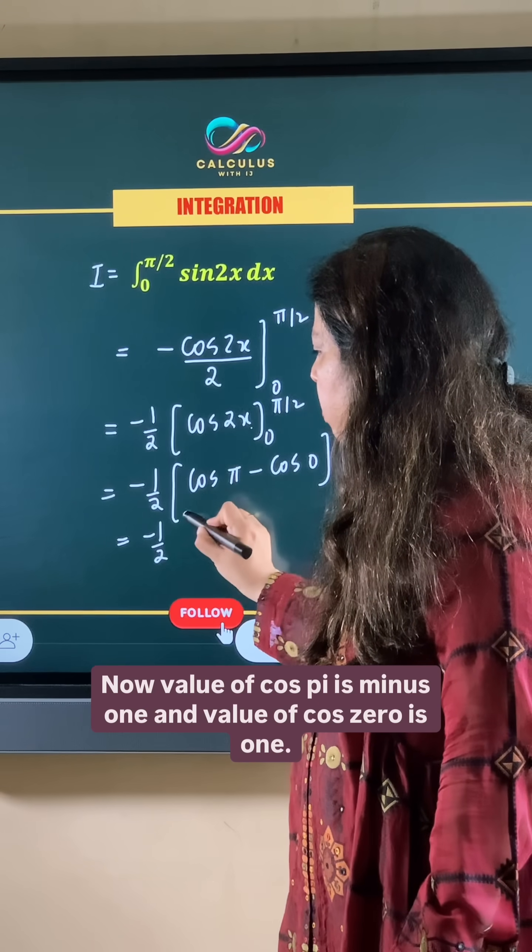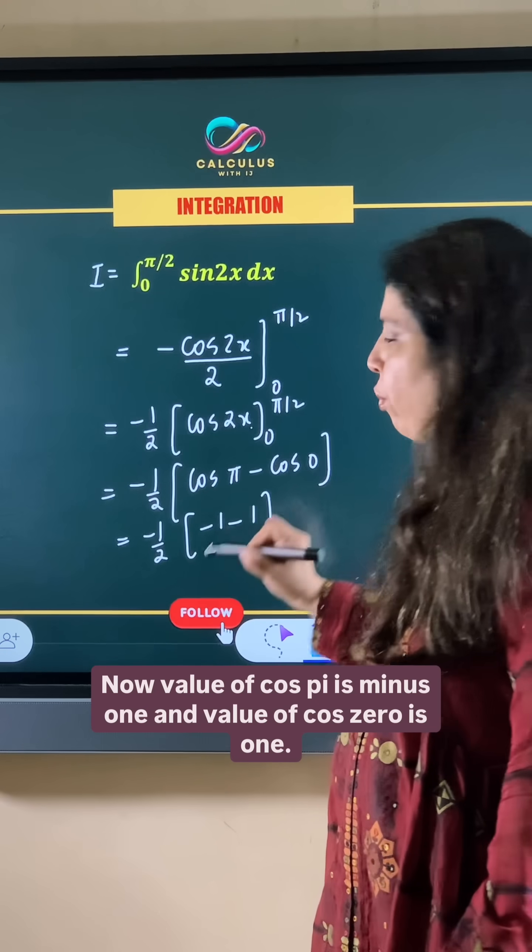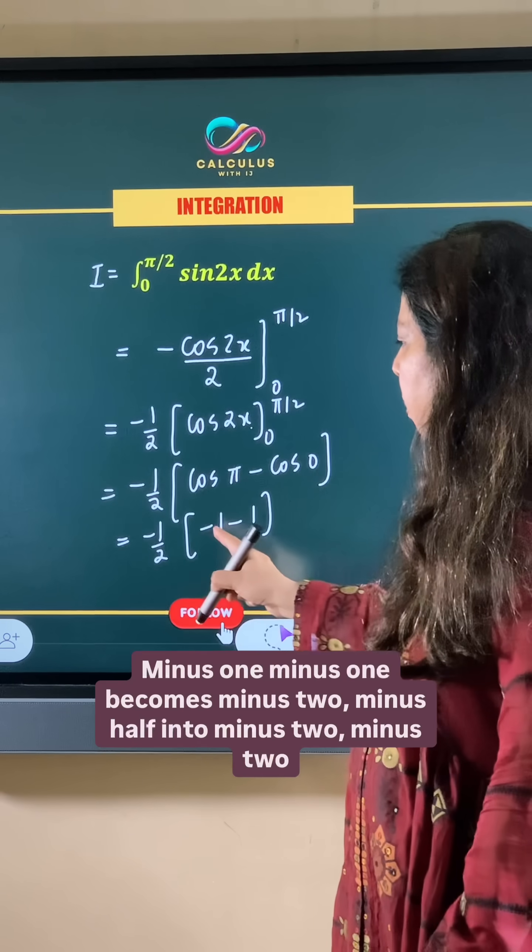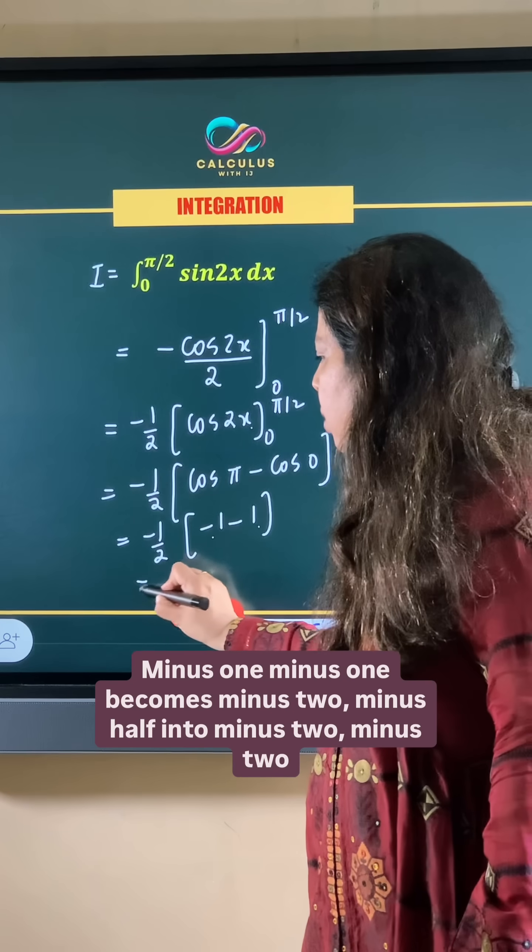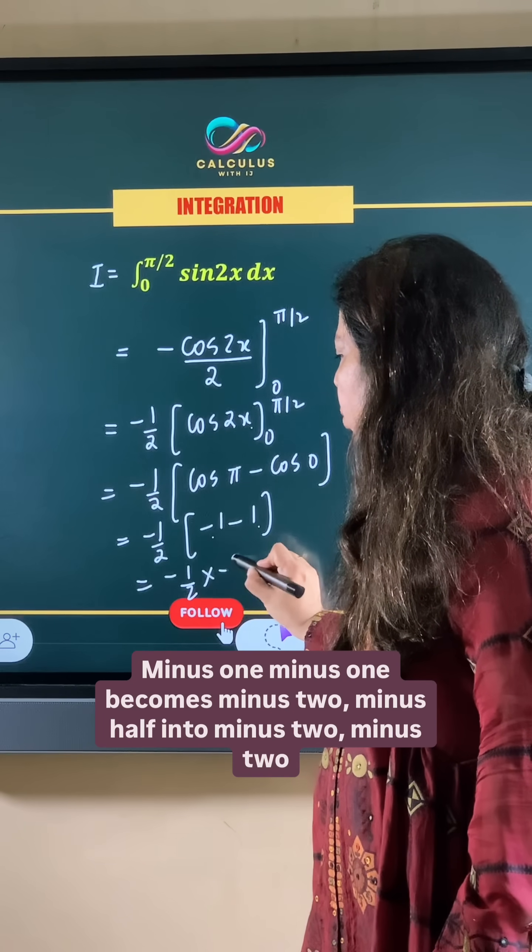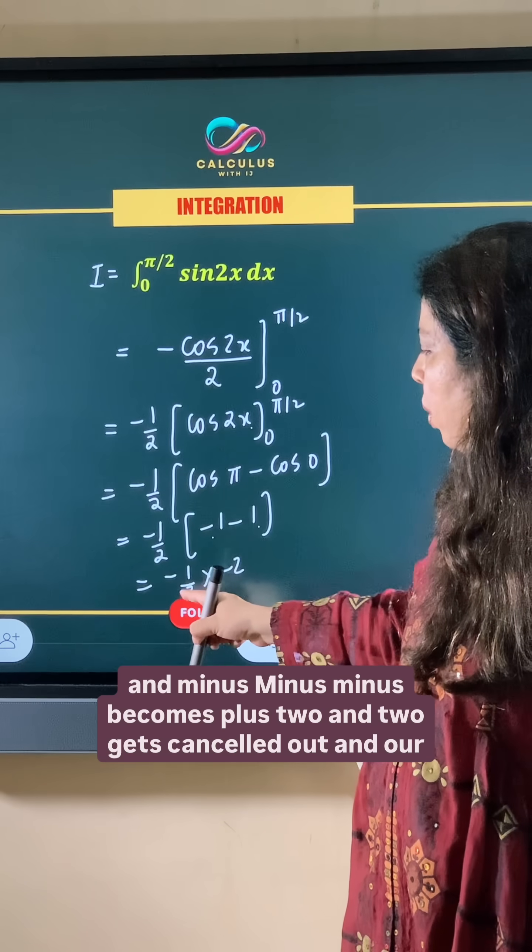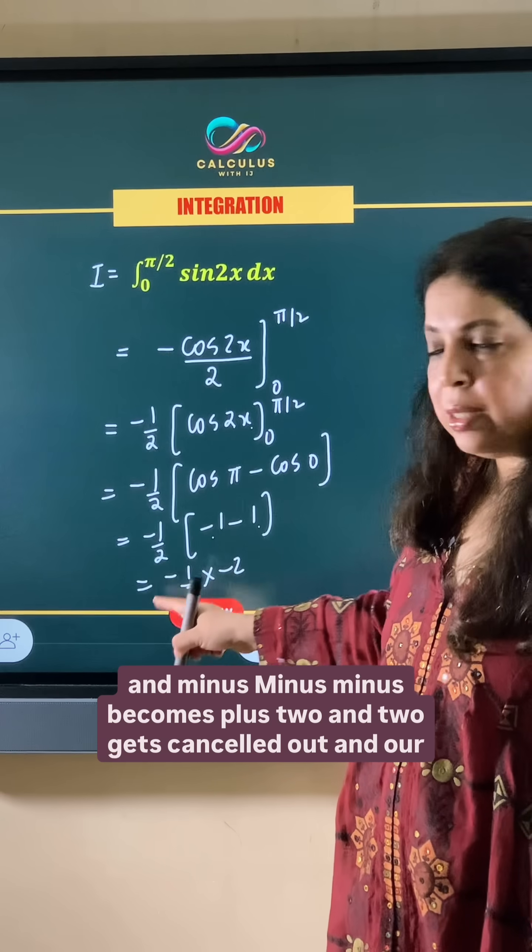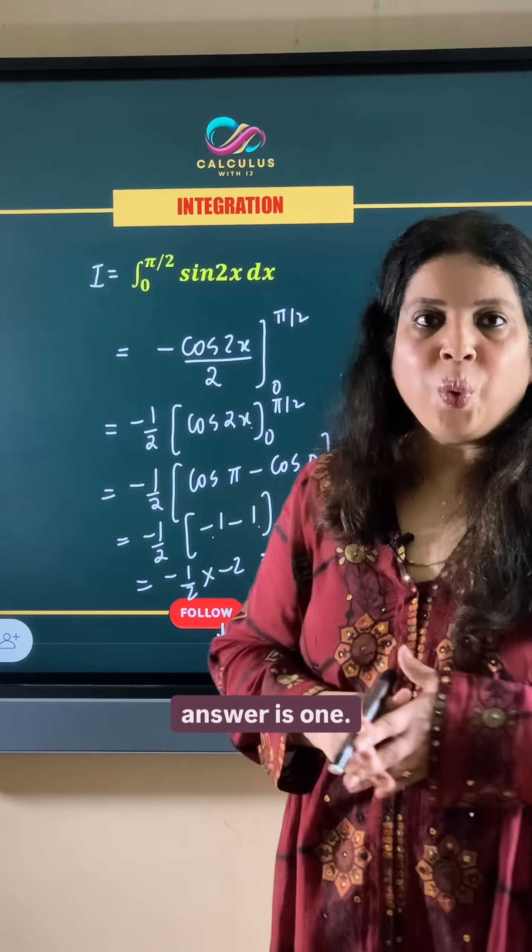The value of cos π is -1 and the value of cos 0 is 1. -1 minus 1 becomes -2. Then -1/2 times -2: minus times minus becomes plus, and 2 gets cancelled out, so our answer is 1.